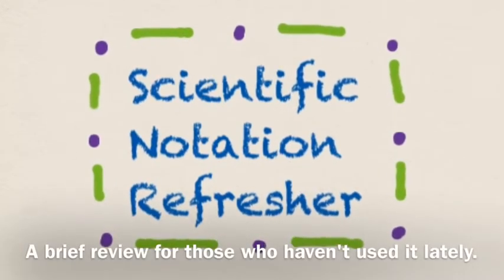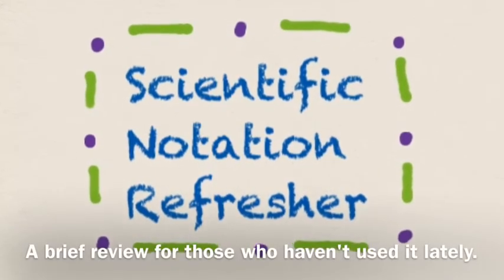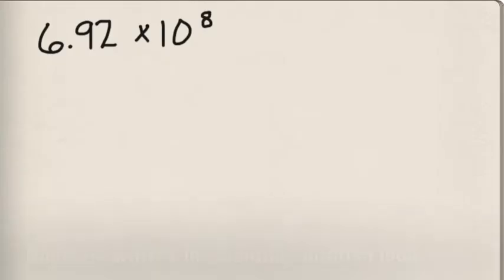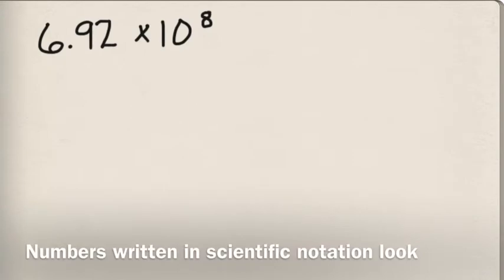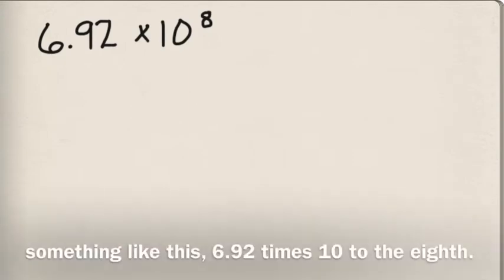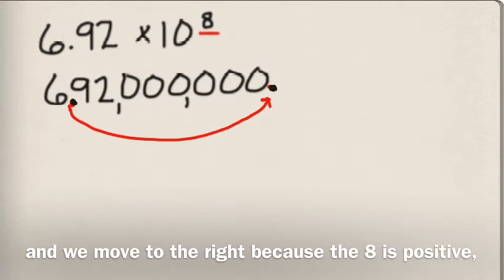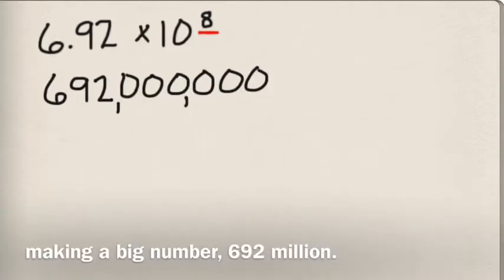Scientific Notation Refresher — a brief review for those who haven't used it lately. Numbers written in scientific notation look something like this: 6.92 times 10 to the 8th. The exponent tells us how many places to move the decimal, and we move it to the right because the 8 is positive, making a big number: 692 million.